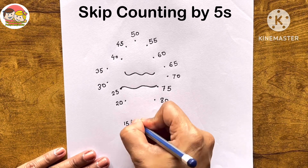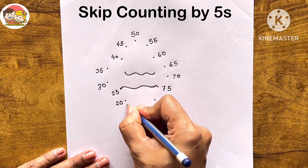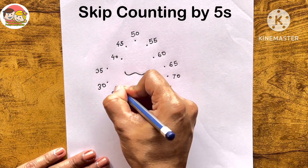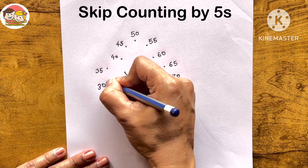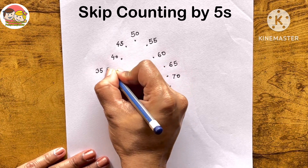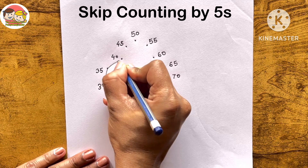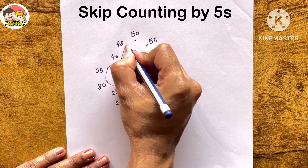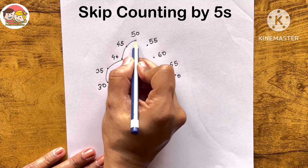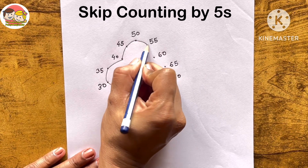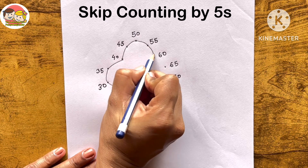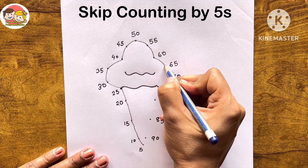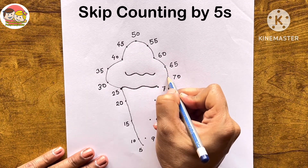Continuing: 15 plus 5 is 20, plus 5 is 25, plus 5 is 30, plus 5 is 35, plus 5 is 40, plus 5 is 45, plus 5 is 50, plus 5 is 55, plus 5 is 60, plus 5 is 65, plus 5 is 70, plus 5 is 75.